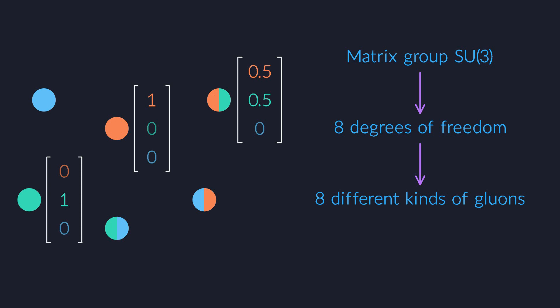It turns out to be as easy as counting the degrees of freedom in a group of matrices with specific properties.